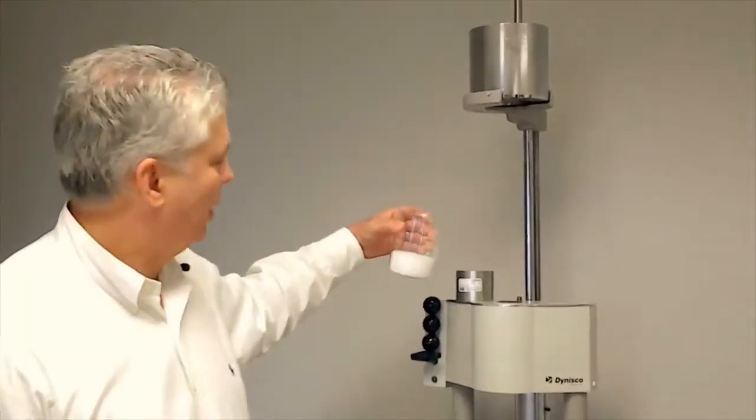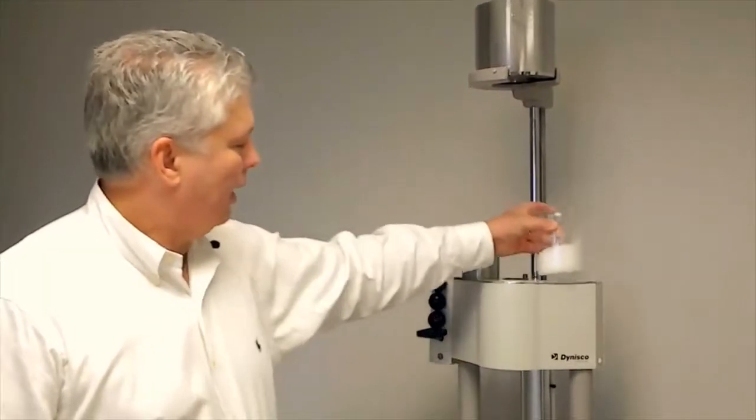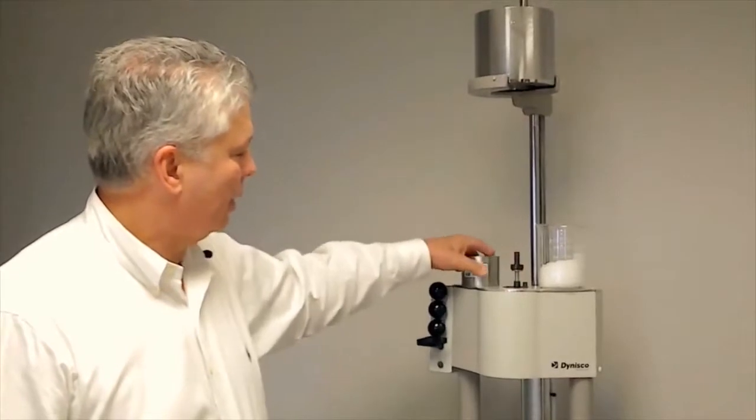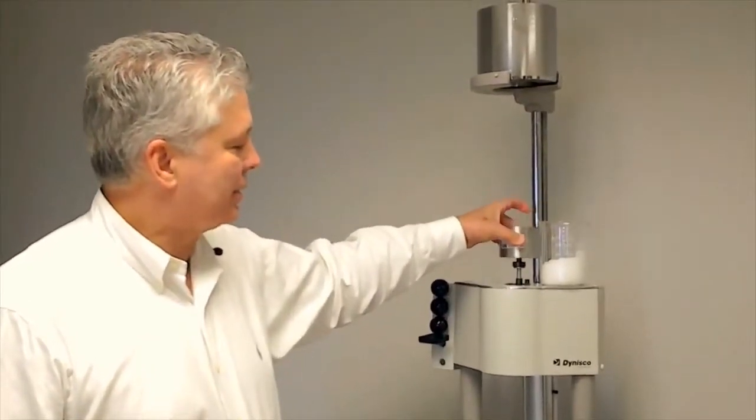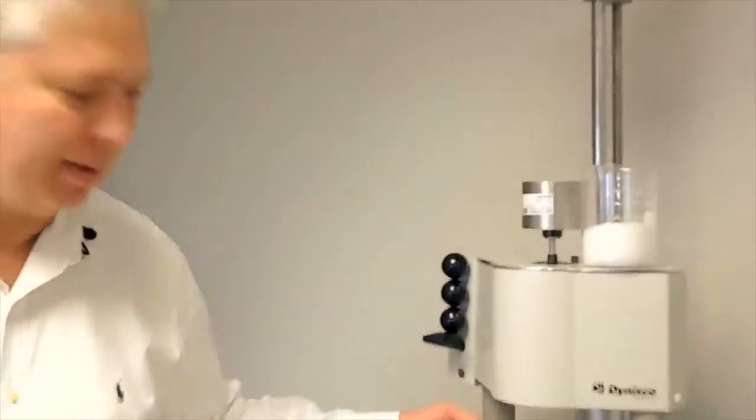It's 190°C, which you pour the resin into and then you put the weight on top. It's a 2.16 kg weight. Then you measure how much plastic comes out of this hole at the bottom. Can we get a tight on that?